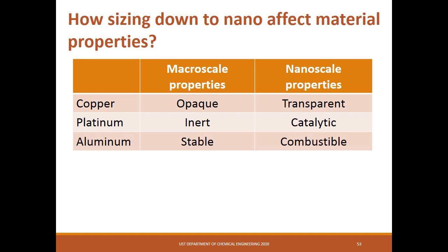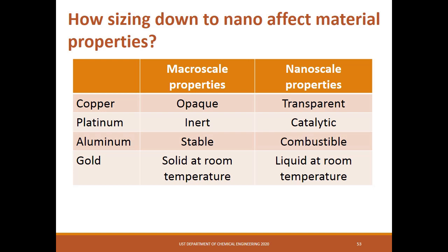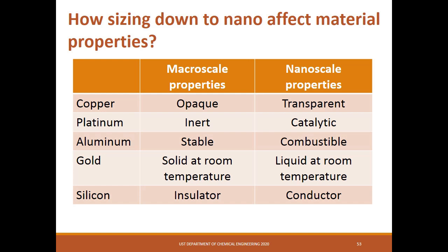Gold changes its color from yellow to other colors depending on its size. In addition, even though bulk gold is solid at room temperature, nanoscale gold is liquid at room temperature. Silicon is widely used in semiconductors such as wafers to produce solar panels, but bulk silicon without any dopant or impurities is an insulator by nature. However, at nanoscale, silicon becomes conductive, which is why it is a good candidate as anode material for lithium-ion batteries.